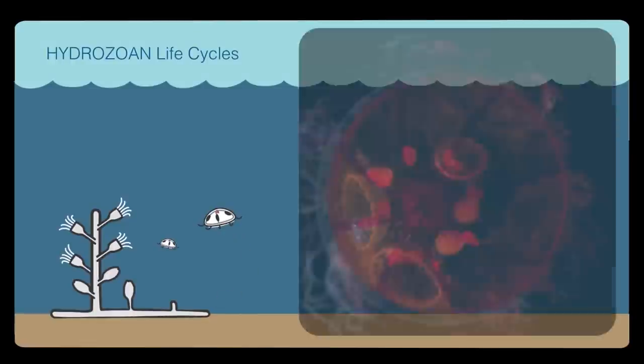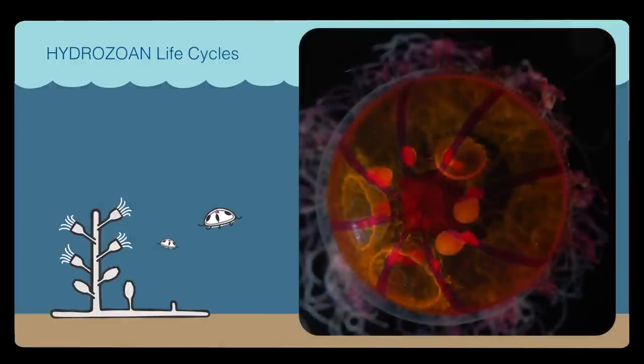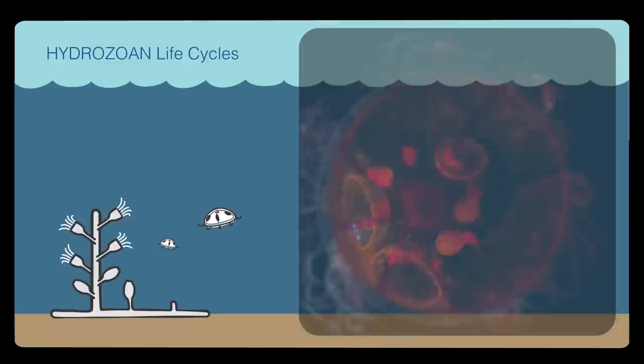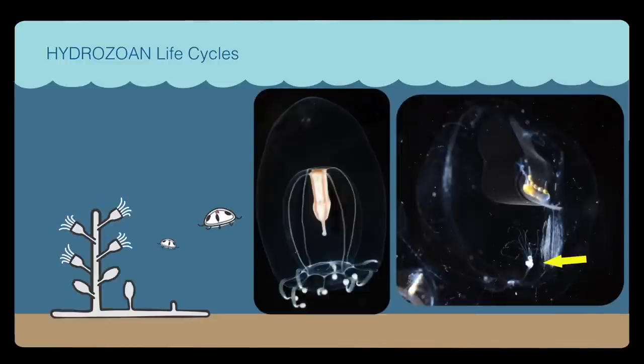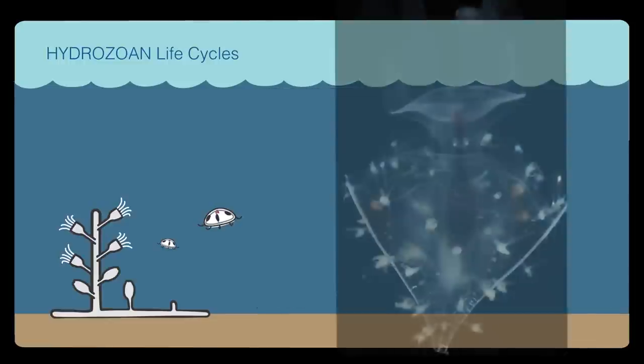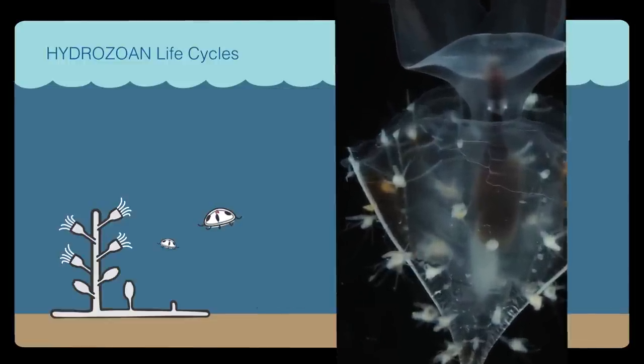In the open ocean and deep sea, where there are few surfaces, animals are resourceful and opportunistic. Some species of hydromeduceae can skip the hydroid stage and develop baby meduceae directly within their bell. Others have a hydroid that lives on drifting organisms, even the shells of snails or the backs of deep sea shrimp.